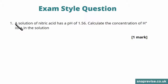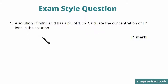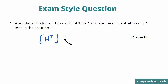Question number 1 says that a solution of nitric acid has a pH of 1.56. Calculate the concentration of H plus ions in this solution. Here we want to use the formula where the concentration of H plus ions is equal to 10 raised to the minus pH.